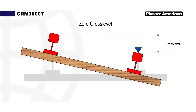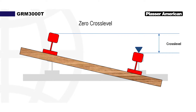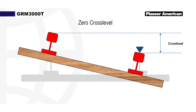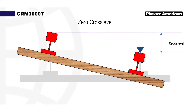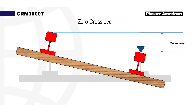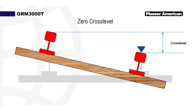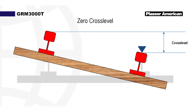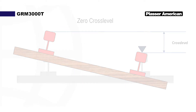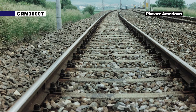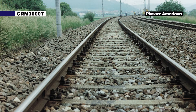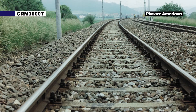In tangent track we speak of cross-level; in transitions and curves we speak of superelevation. Cross-level is a name for the measurement of the vertical distance between left and right top of rails. Superelevation is a name used to describe the cross-level angle of track on a curve, which is used to compensate for lateral forces generated by the train as it passes through the curve. In effect, the ties are laid at an angle so that the outer rail on the curve is at a higher level than the inner rail.